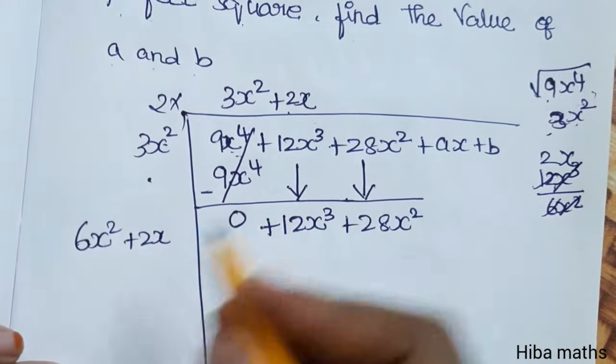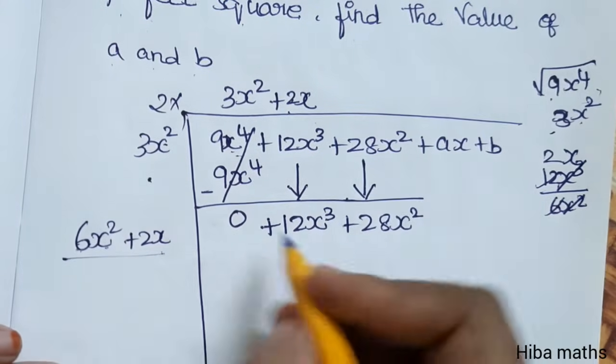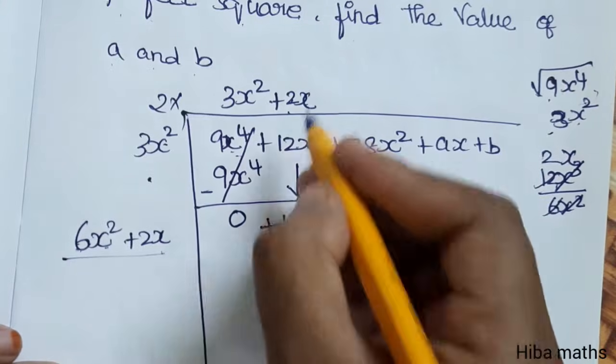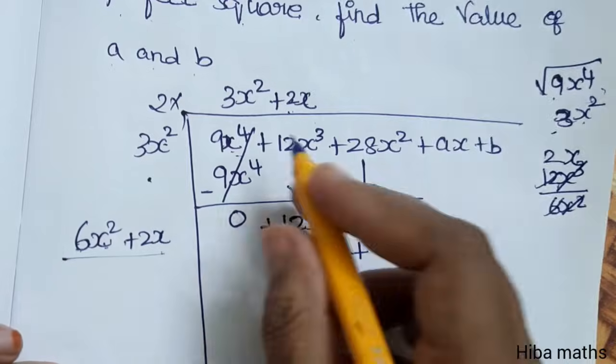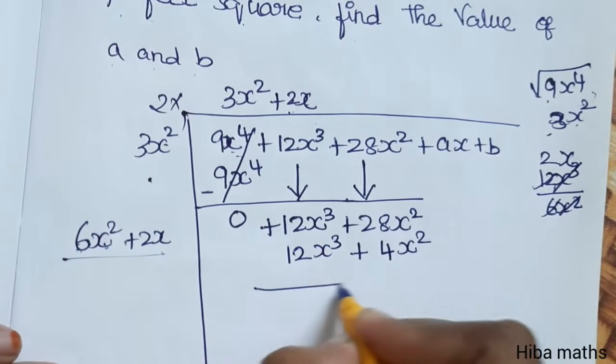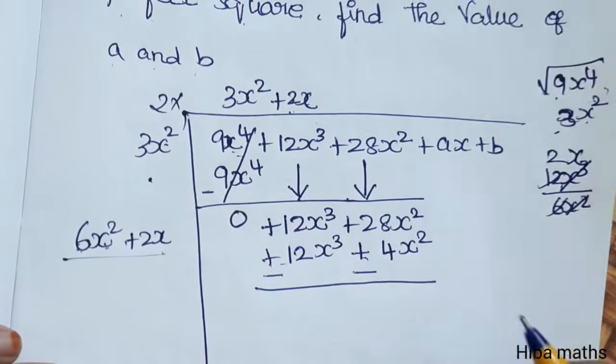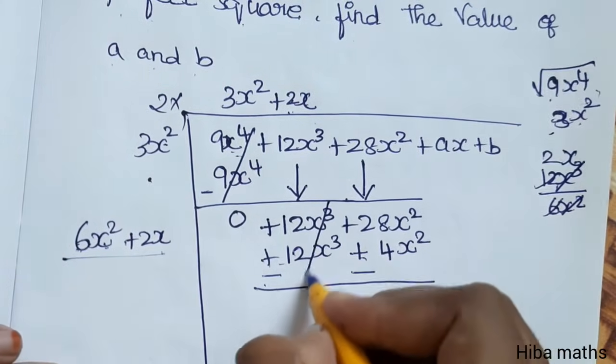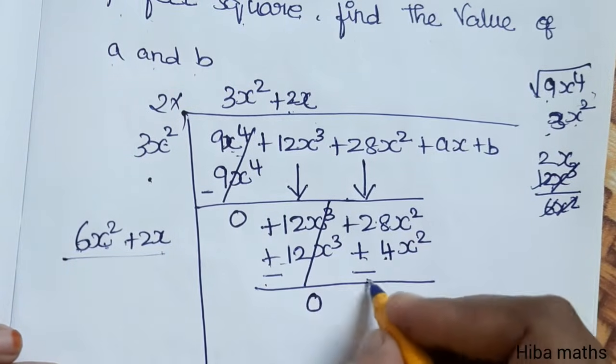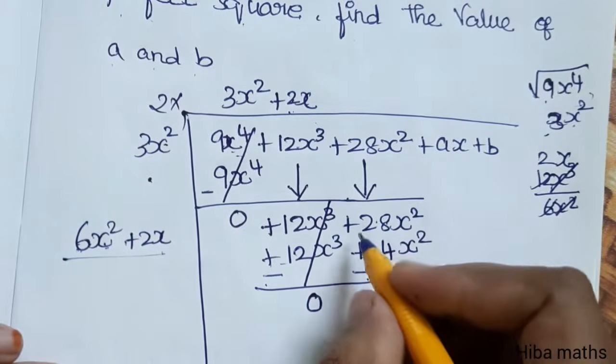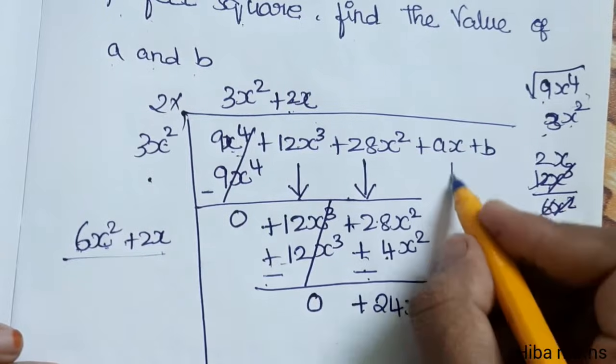Now multiply: first 6x², 2 times 6 is 12, x into x² is x³, plus into plus is plus. 2 times 2 is 4, x into x is x². Minus minus, two negatives are plus. Cancel it. This is minus, it is the same, so cancel it is 0. Balance 28 minus 4 is 24. So plus 24x².